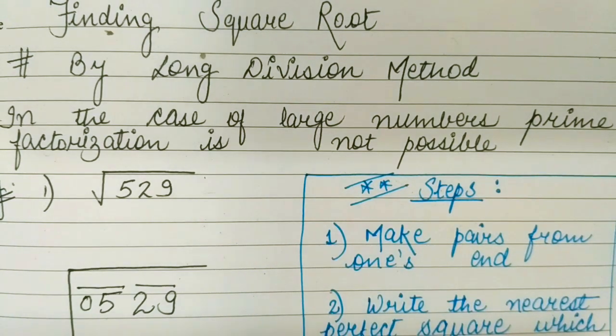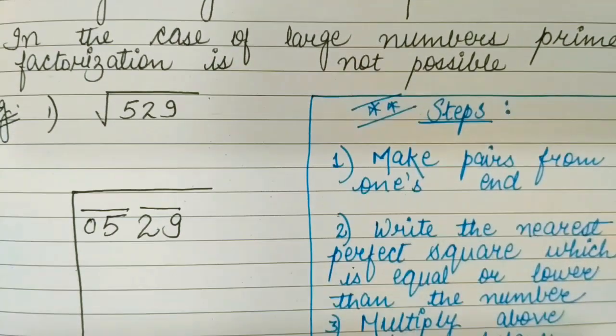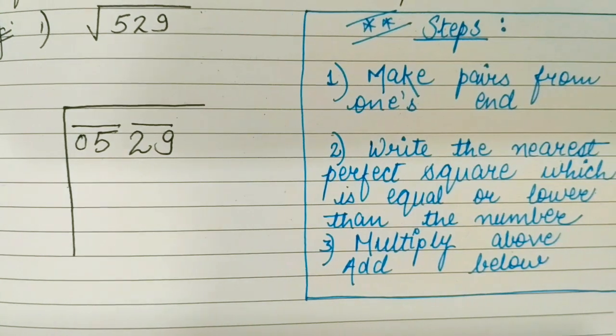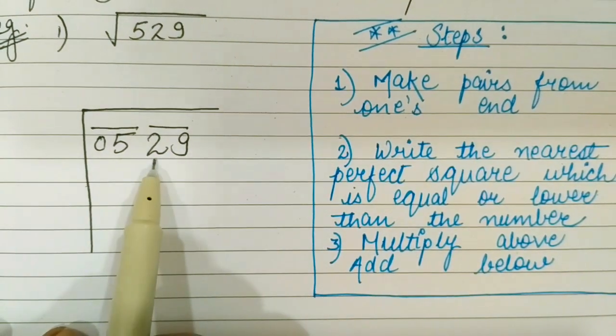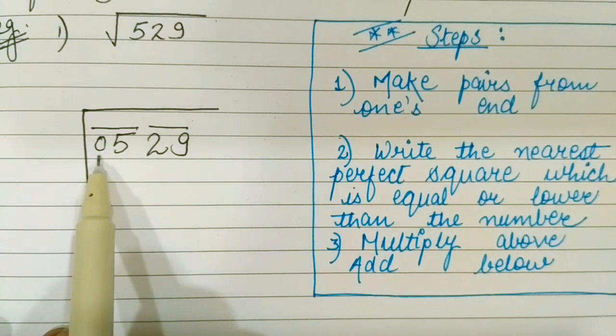So here I am going to discuss with you how we are going to apply long division method. The first step in the long division method is to make pairs from one's end. Start making pairs from one's end. 5 is left alone so I have put it as 0.